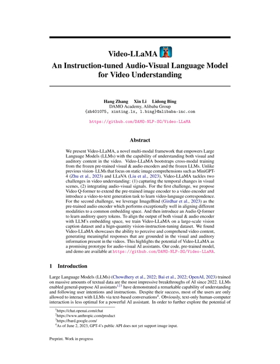The VideoLlama method aims to enhance the LLM's ability to comprehend both visual and auditory content in videos. The method consists of two branches — the vision-language branch and the audio-language branch — which transform video frames and audio signals into query representations compatible with the LLM's textual inputs. The vision-language branch includes a frozen pre-trained image encoder, a position embedding layer, a video Q-Former, and a linear layer to project video representations into the same dimension as the LLM's text embeddings.